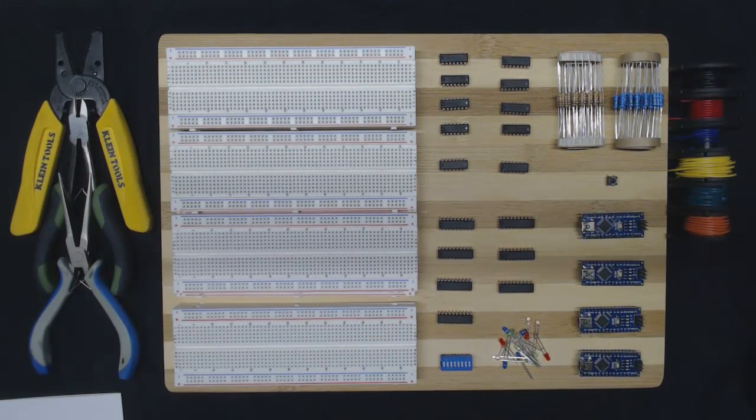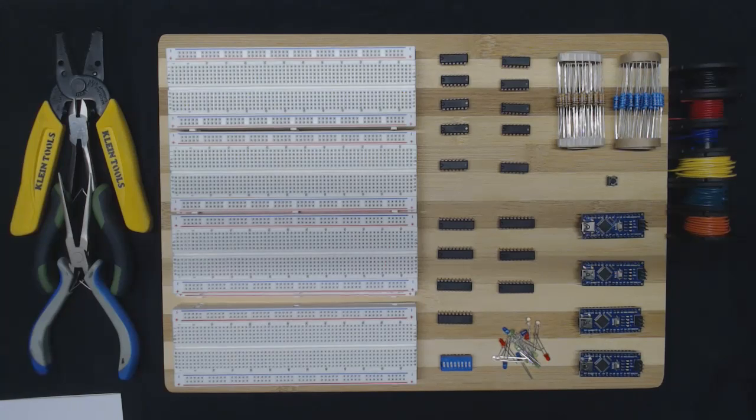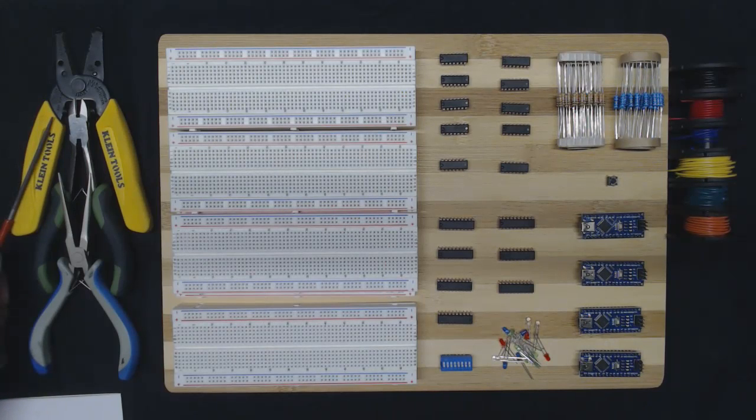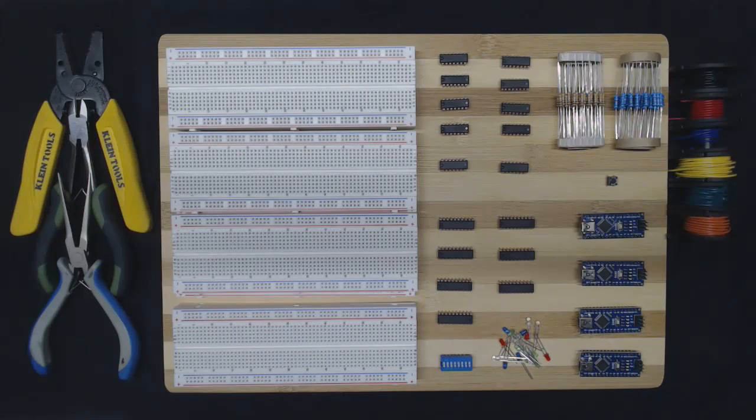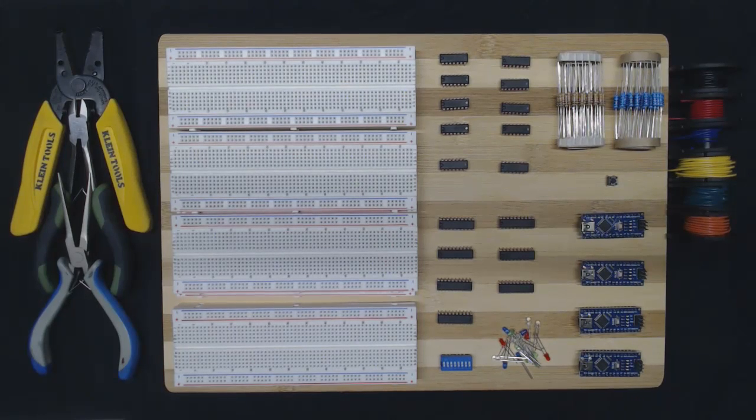That's pretty much it for the component parts. You're going to need some tools also: some wire strippers, some cutters, and some needle-nose pliers here that I use to bend the ends of the wires and put them in the breadboard. So that basically covers all of the material that we're going to need to do this build.